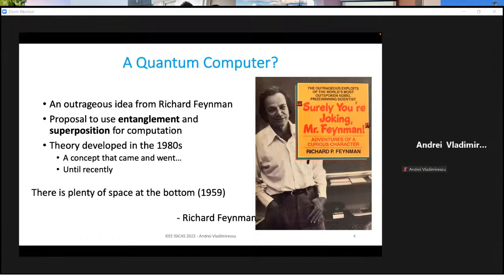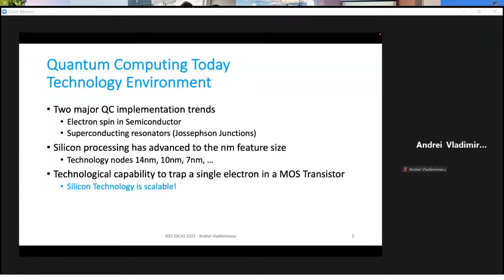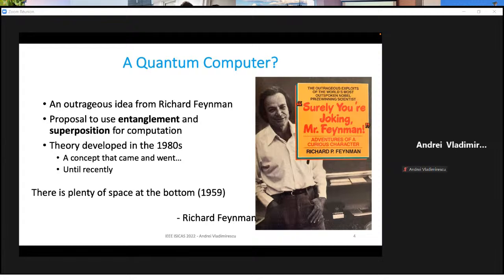Well, it all started with a famous physicist, Nobel Prize winner Richard Feynman, who had such an outrageous idea that he and a ghostwriter published a book called Surely You're Joking, Mr. Feynman. Maybe he was joking. I don't know if he really believed that this would happen. But now it's actually going to happen and it's in the implementation stages. His proposal was to use entanglement and superposition for actual computations.